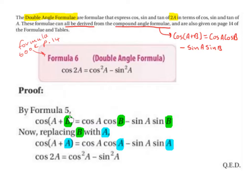So cos(A + B) becomes cos(A + A). Cos A stays as it is. Cos B becomes cos A. We bring down the minus. Sin A stays as it is, and sin B becomes sin A.